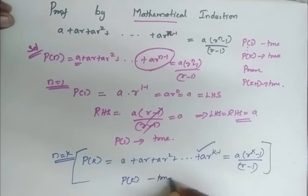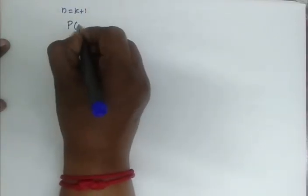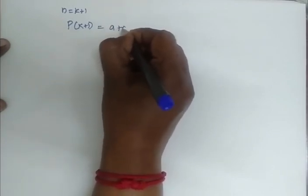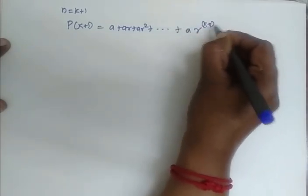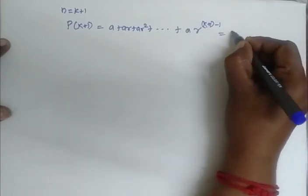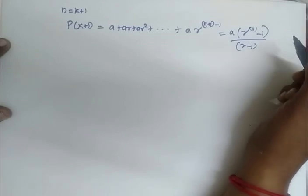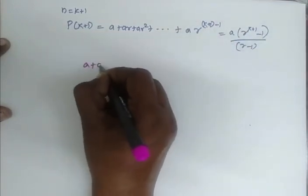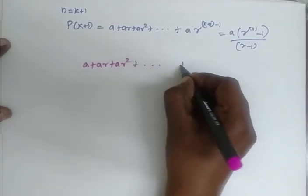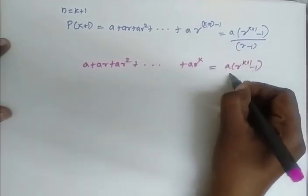Now my P of K is true. So P of 1 is true, P of K is true, and I have to prove for P of K plus 1. When my n is equal to k plus 1, my P of K plus 1 is: a plus a r plus a r squared, etc., plus a r power k plus 1 minus 1, which is a r power k. This gives a r power k plus a r minus 1 by r minus 1. Considering this series, I get a r power k plus 1 minus 1 by r minus 1.